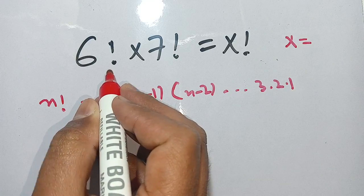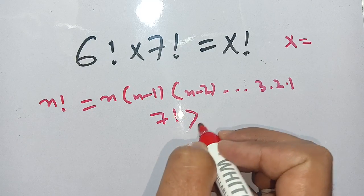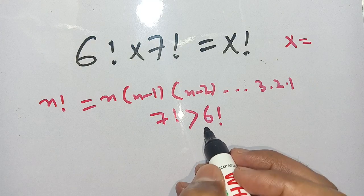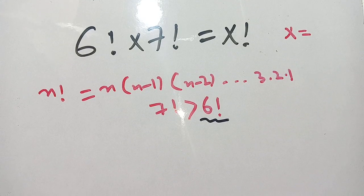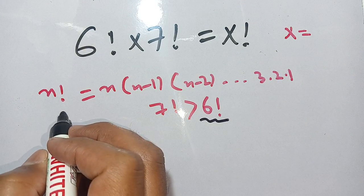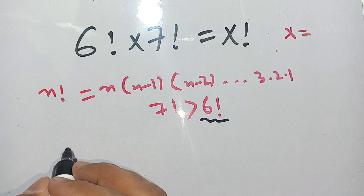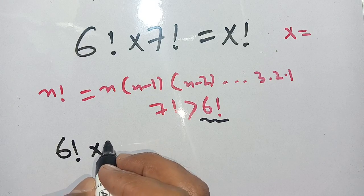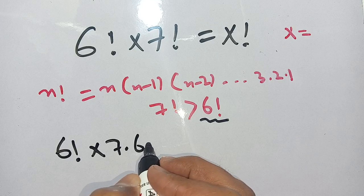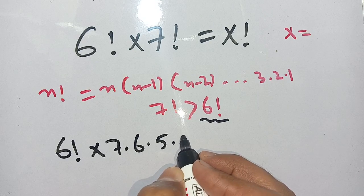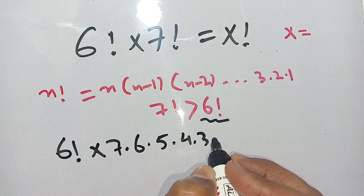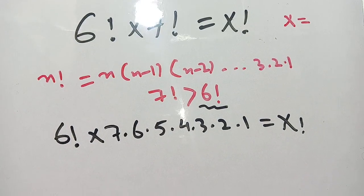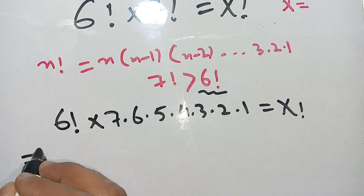We use this definition of n factorial here. Since 7 factorial is greater than 6 factorial, we keep 6 factorial as it is and we open 7 factorial. Applying the definition, 7 factorial becomes 7 times 6 times 5 times 4 times 3 times 2 times 1, so we have 6 factorial times that expression equal to x factorial.